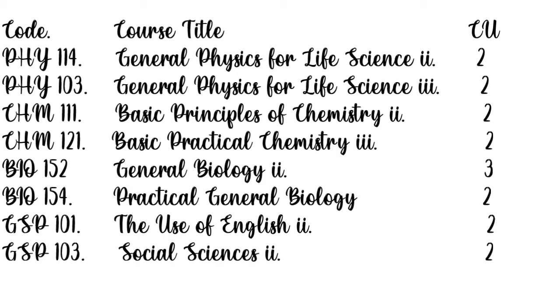Now in second semester, you are exposed to Physics 114 with a credit unit of 2, Physics 103 with a credit unit of 2, Chemistry 111 with a credit unit of 2, Chemistry 121 with a credit unit of 2, Biology 152 with a credit unit of 3, Biology 154 with a credit unit of 2, and GST 102 with a credit unit of 2. The total cumulative credit unit for second semester is 17.